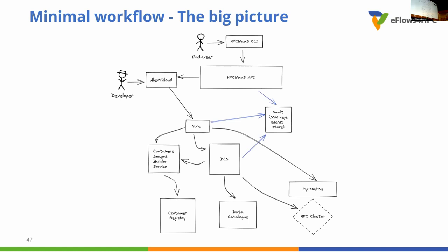For the developer, you will interact mainly with a graphical user interface called AlienForkload. There are two components, AlienForkload and York, that are part of what we call the Easter orchestration stack. They work together and are both developed at Athos. The developer will interact with AlienForkload to provide some Tosca components and to compose them into an application that will expose some workers. Then we will use York as the first workflow orchestration engine.